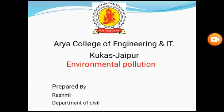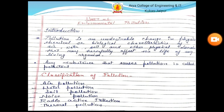Today, we are going to discuss about environmental pollution. Introduction. Pollution is an undesirable change in our biological characteristics — air, water, soil, and other physical domains — that can fully affect the life of any living organism. Any substance that causes pollution is called a pollutant.